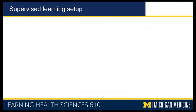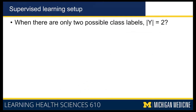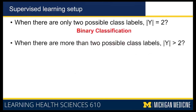In the supervised learning setup, when you have only two possible outcomes, two possible classes, this is called a binary classification task. When the size of the set of output labels Y is greater than two, this is called a multi-class classification problem. So if there are two possible outcomes it's binary classification, and if there are more than two, it's a multi-class classification problem.